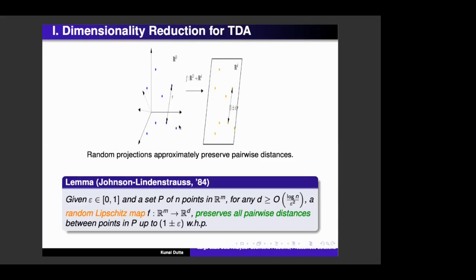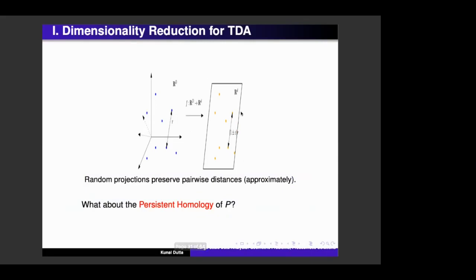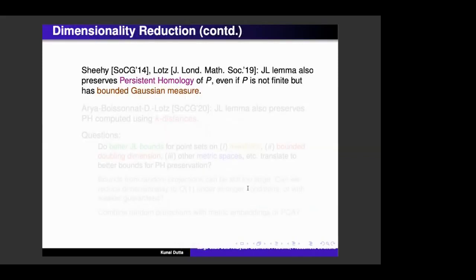which says that if you randomly project your data points onto a smaller dimensional subspace, so you have this high dimensional space, and you are projecting your data points onto a smaller dimensional random subspace, then the pairwise distances are preserved up to a factor of one plus minus epsilon. So you need appropriately smaller dimensional subspace. And, but this is not sufficient to preserve the persistent homology, but there were results more recent, which showed that you can also preserve the persistence, persistent homology.